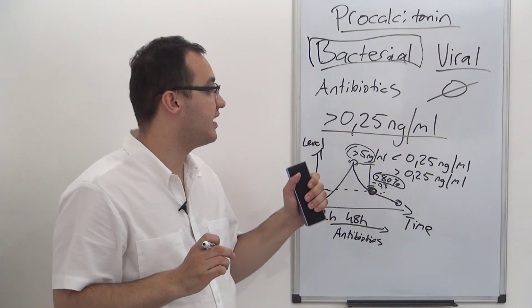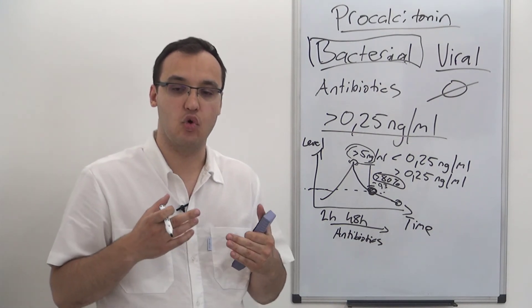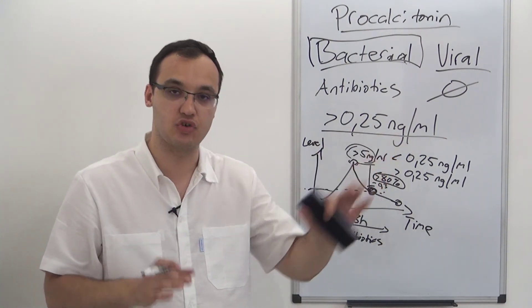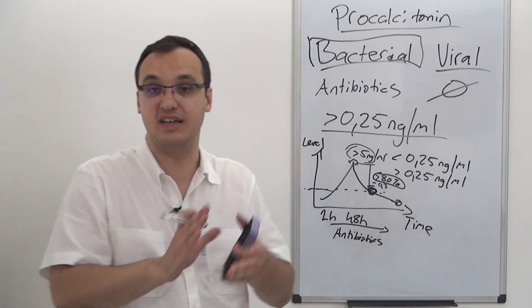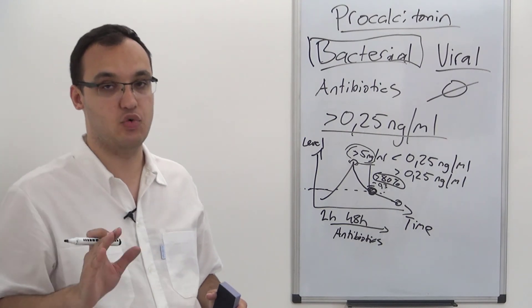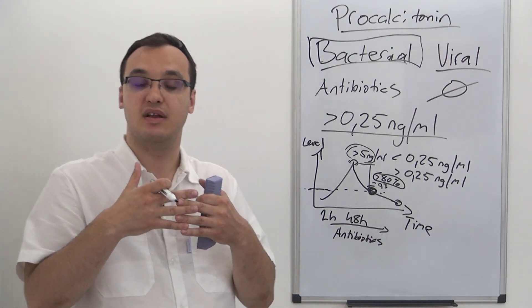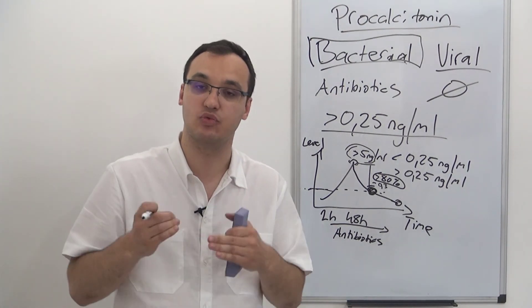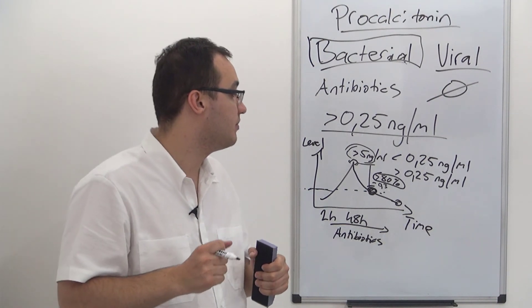Another important point: when a patient has dyspnea — difficulty breathing — the two most common causes are heart failure or pneumonia. Procalcitonin is very important here: if procalcitonin is increased, it's probably pneumonia; if it's not increased, it's probably heart failure. Always think of heart failure when you have difficulty breathing. The body is all interconnected — if the heart does not work properly, fluid builds up in the lungs, causing difficulty breathing. Thank you very much for listening.